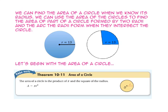We can find the area of a circle when we know its radius. We can also use the area of a circle to find the area of part of a circle formed by two radii and the arc they form when intersecting the circle. This part of a circle is called a sector.